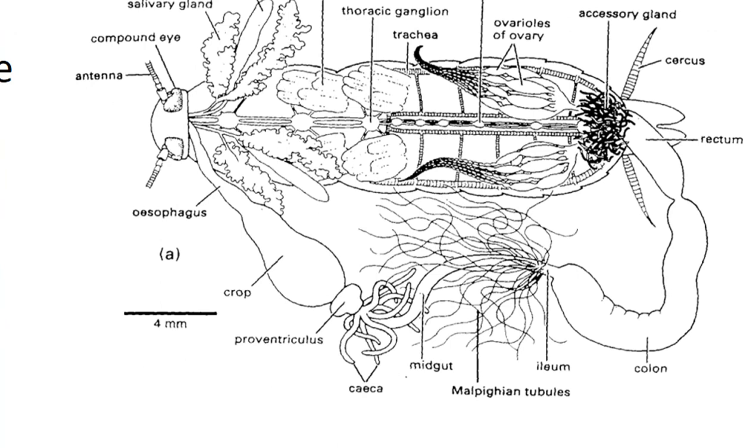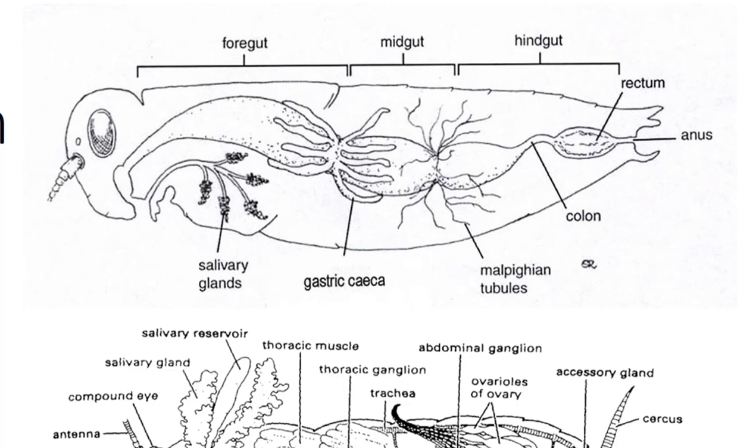In some insects, the crop opens into a muscular proventriculus. This organ contains tooth-like denticles that grind and pulverize food particles. The proventriculus serves much the same function as a gizzard in birds. The midgut is the major area of digestion and absorption.